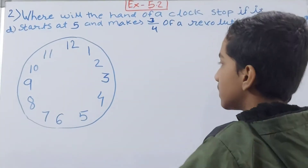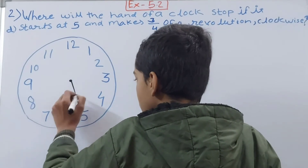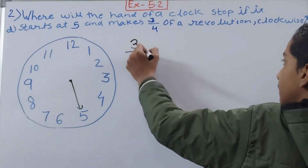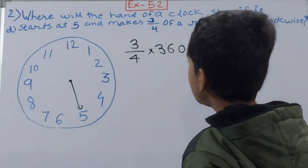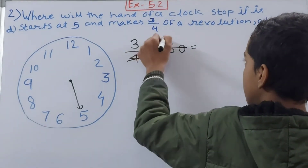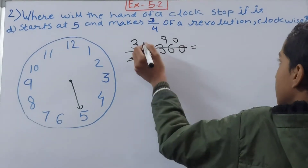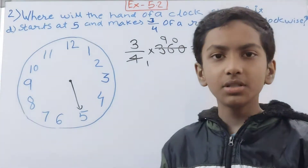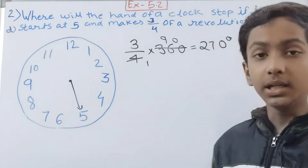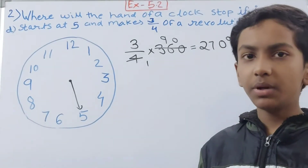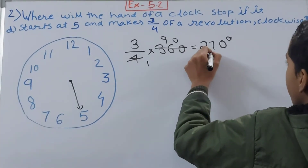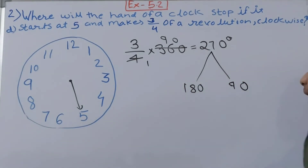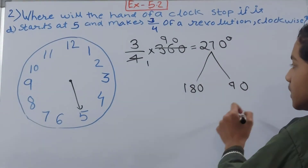Part D: the clock hand starts at 5 and makes 3/4 of a revolution clockwise. The hand is at 5. Multiply 3/4 by 360 — that gives 270 degrees. Now, 270 degrees is not a simple angle, so we break it down: 270 = 180 + 90. We know how to handle both — 180 degrees is a straight angle, and 90 degrees means moving 3 hours forward.